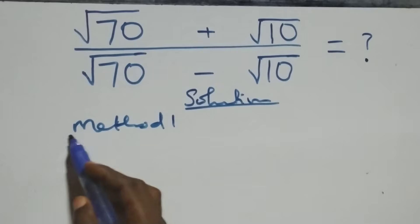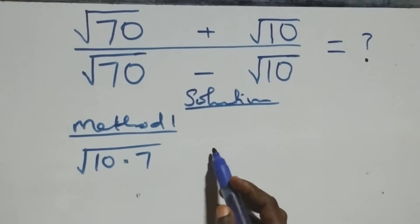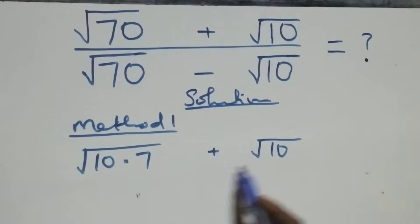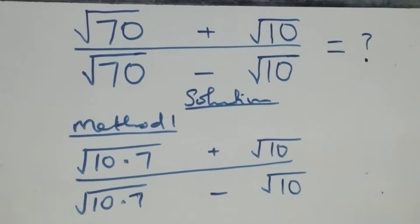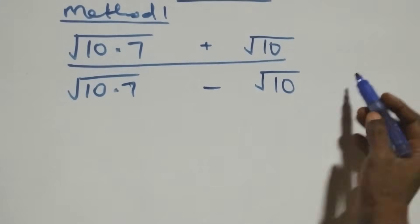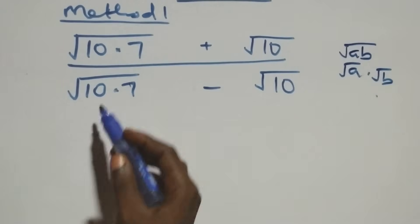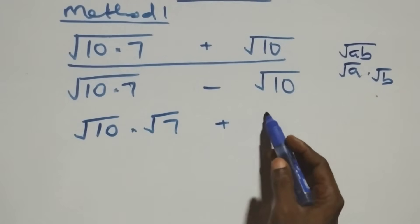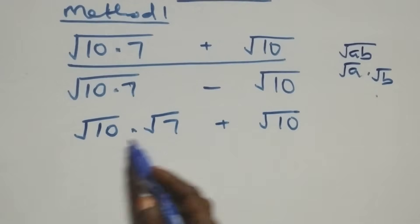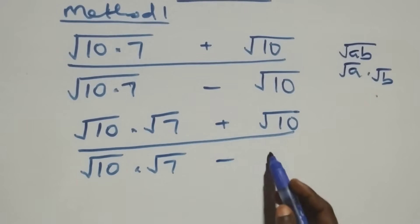For the first method, we rewrite the expression: the numerator becomes √10 · (7 + √10), and the denominator becomes √10 · (7 − √10). This uses the rule √(a·b) = √a · √b, so we get √10 · √7 plus √10 in the numerator and √10 · √7 minus √10 in the denominator.